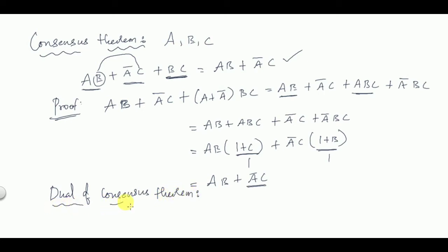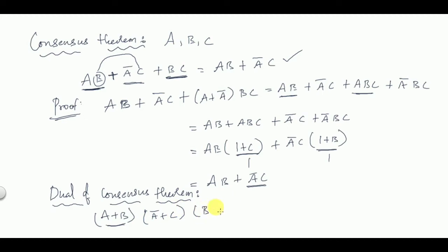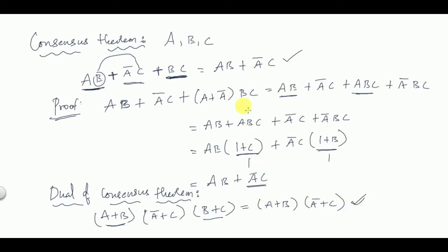The dual of the Consensus Theorem can also be written. The dual of ab + āc + bc = ab + āc is: (a + b)·(ā + c)·(b + c) = (a + b)·(ā + c). Each AND is changed to OR and each OR to AND.